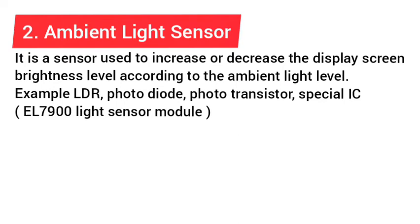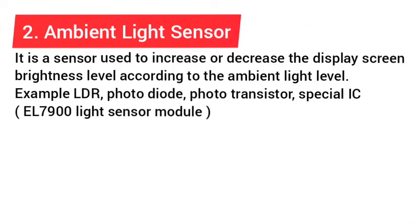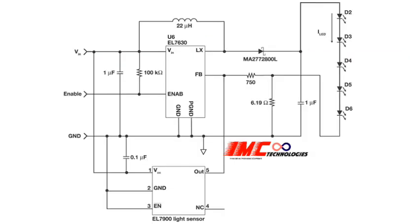Ambient light sensor. It is a sensor used to increase or decrease the screen brightness level according to the ambient light level. Examples include LDR, photodiode, phototransistor, and special IC.